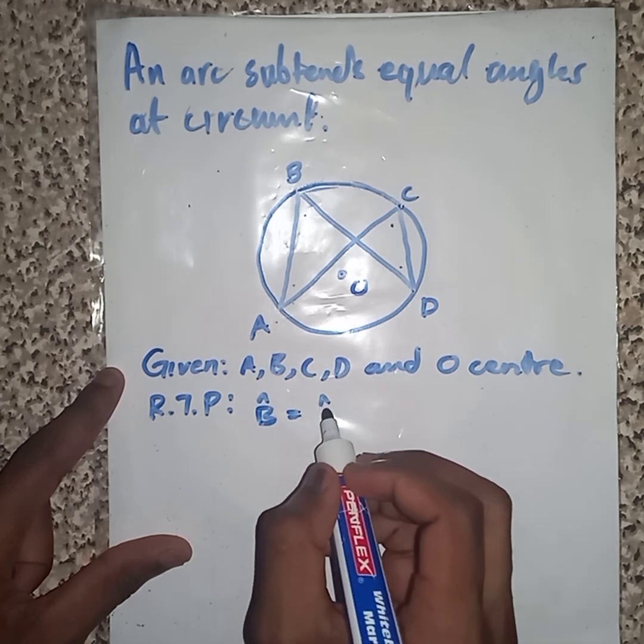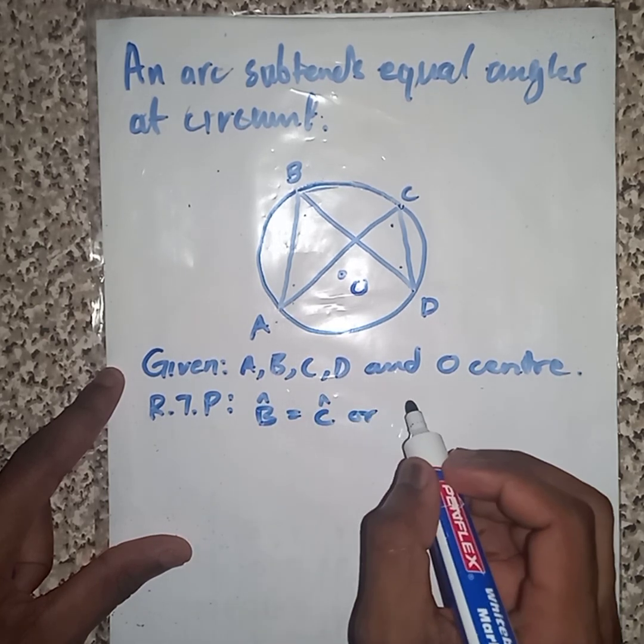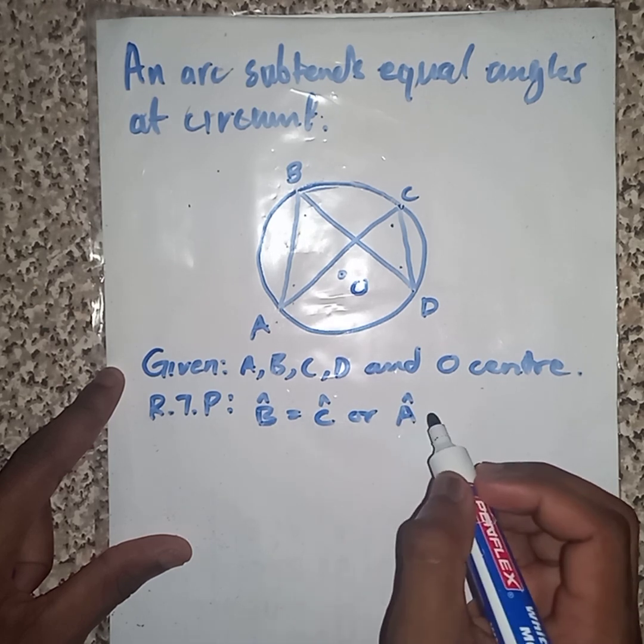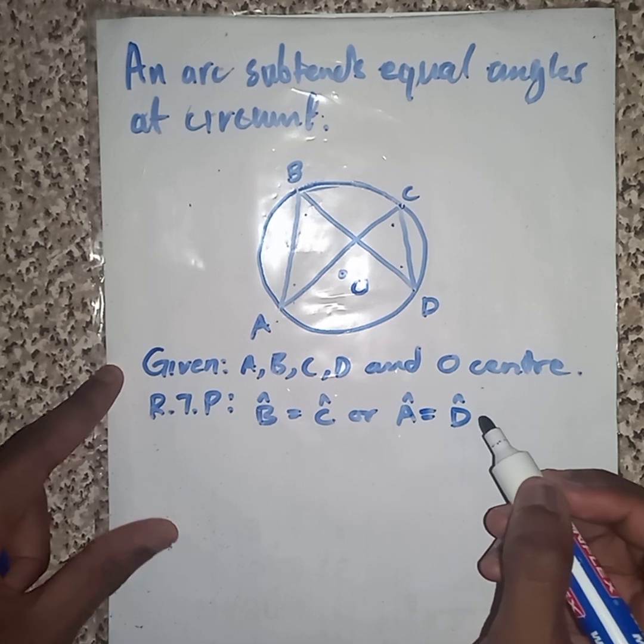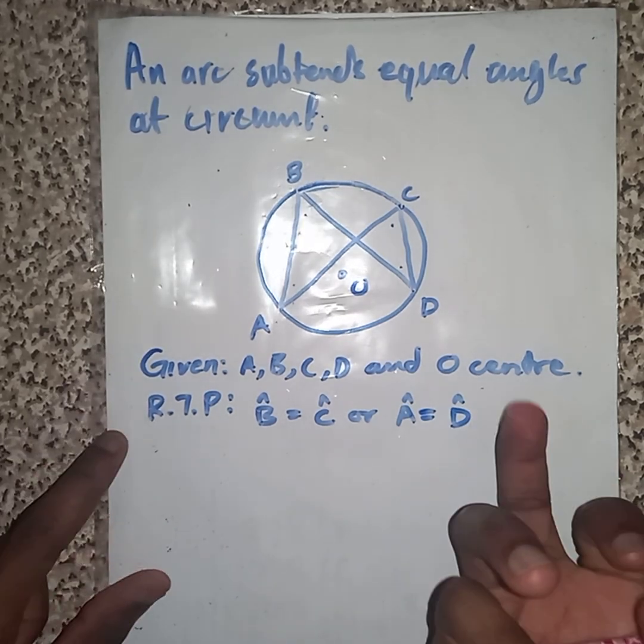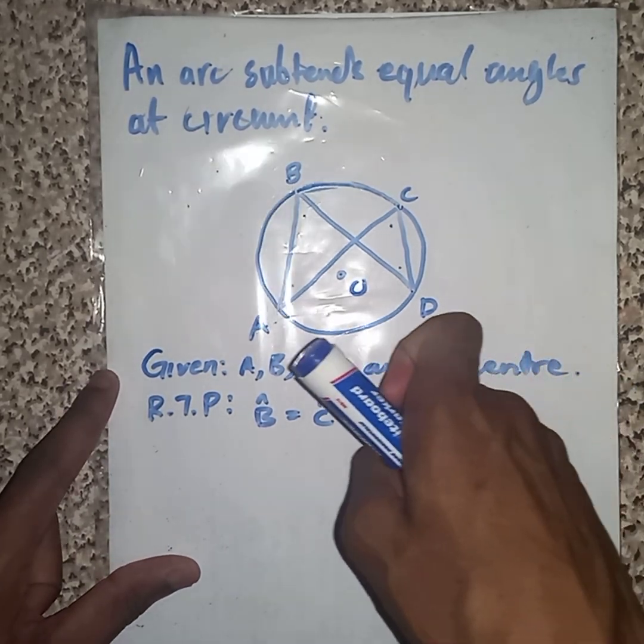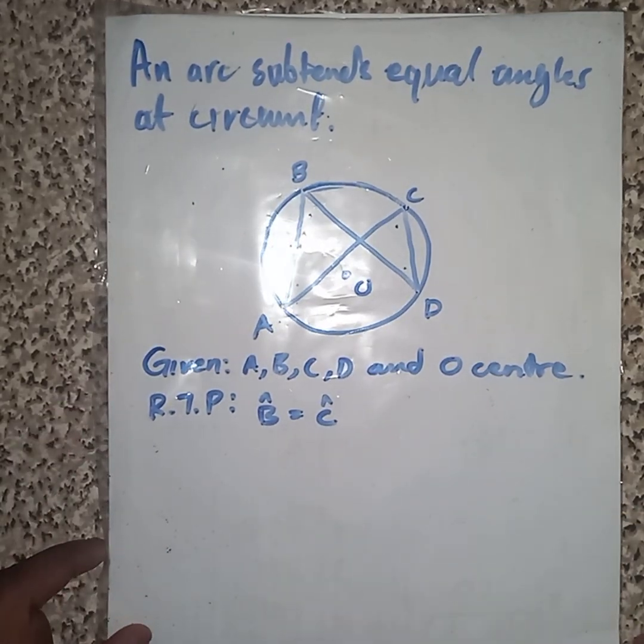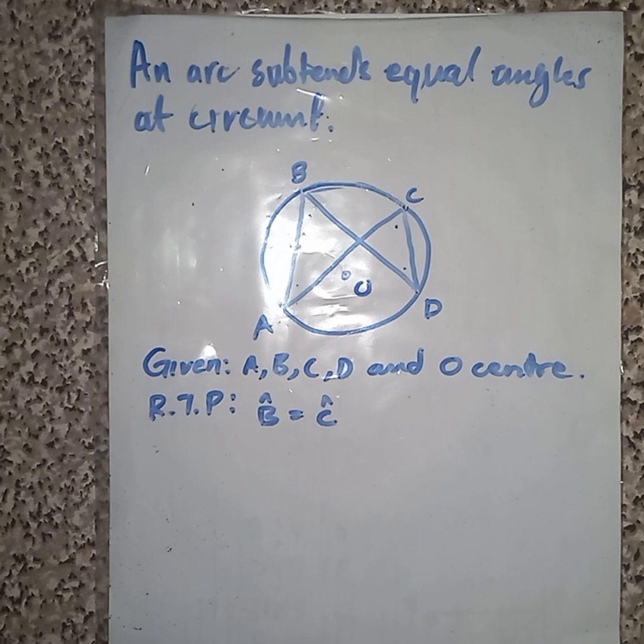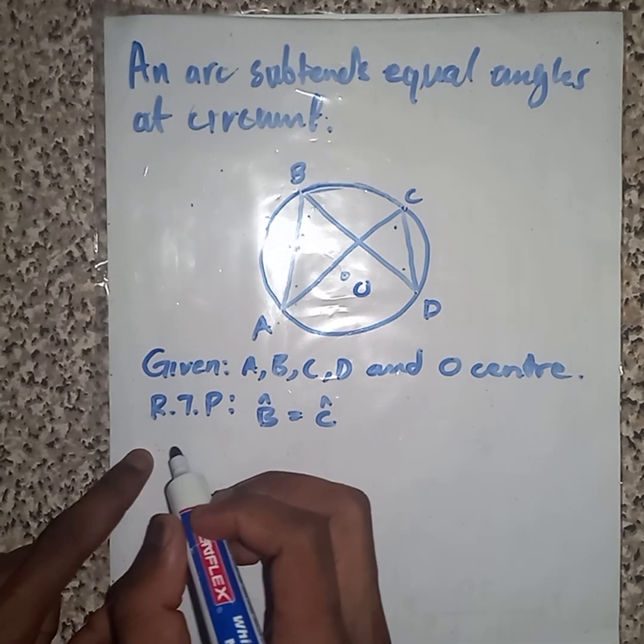Angle B is equal to angle C, or somehow angle A is equal to angle D. For now let me just take this one. Then how are we going to prove this theorem?